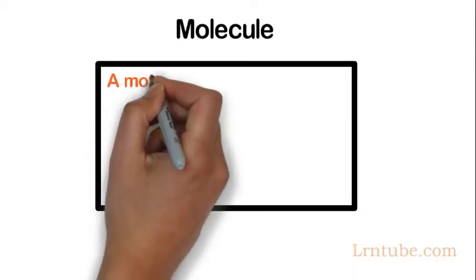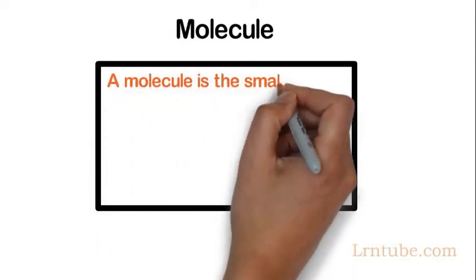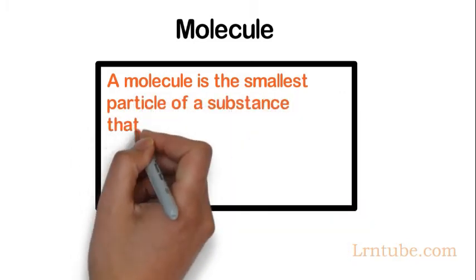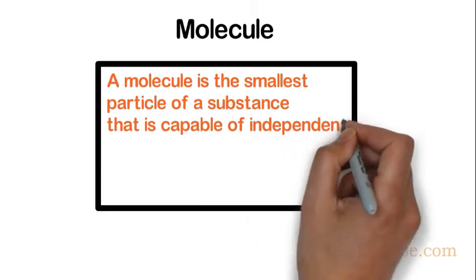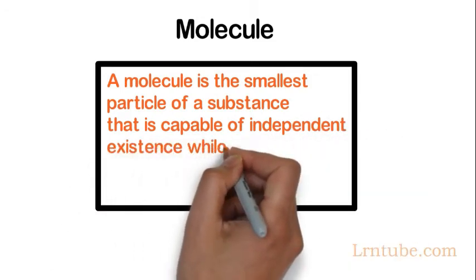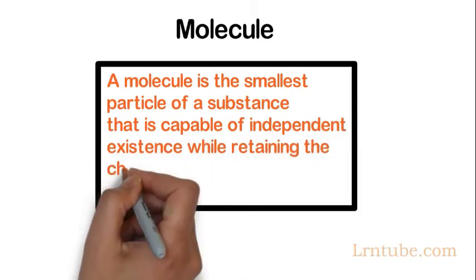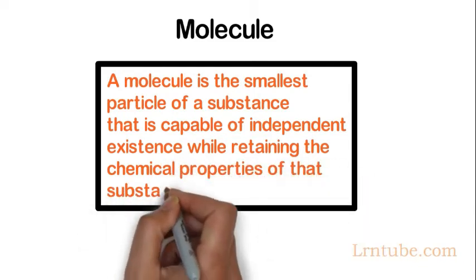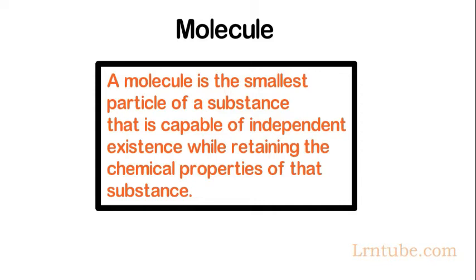A molecule is the smallest particle of a substance that is capable of independent existence while retaining the chemical properties of that substance. A molecule can exist on its own and still maintain the chemical properties of the element.